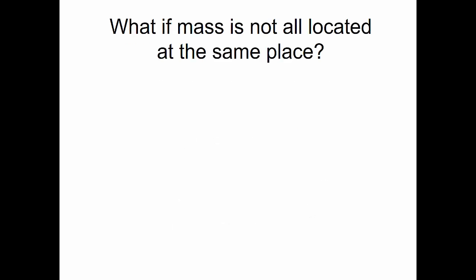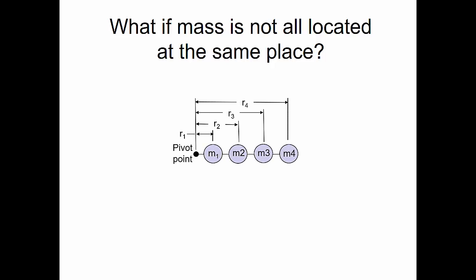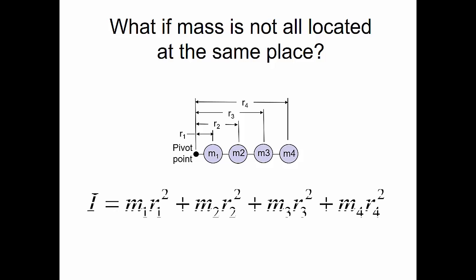What if the mass is not all located at the same place? If we have four different masses M1, M2, M3, and M4 at different radii R1, R2, R3, and R4 respectively, we find the mass moment of inertia by adding each individual mass moment of inertia together. So the total mass moment of inertia is M1·R1² plus M2·R2² plus M3·R3² plus M4·R4².